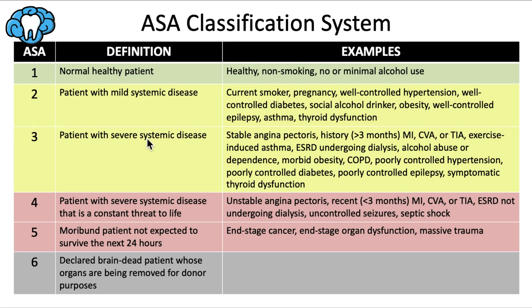Then we go to ASA 3, which is for a patient with severe systemic disease that limits activity but is not incapacitating. This could be stable angina pectoris — chest pain only with a stimulus like physical activity — a past history (more than three months ago) of a heart attack, stroke, or transient ischemic attack, or exercise-induced asthma.